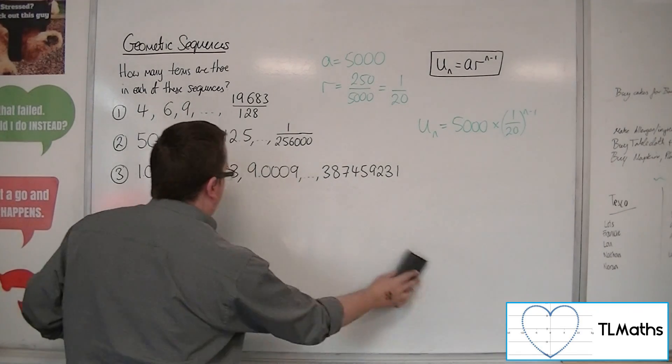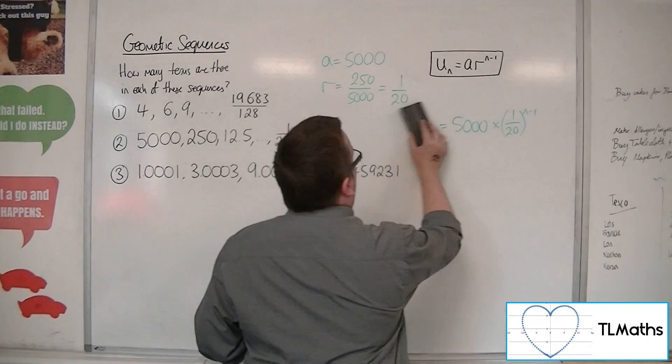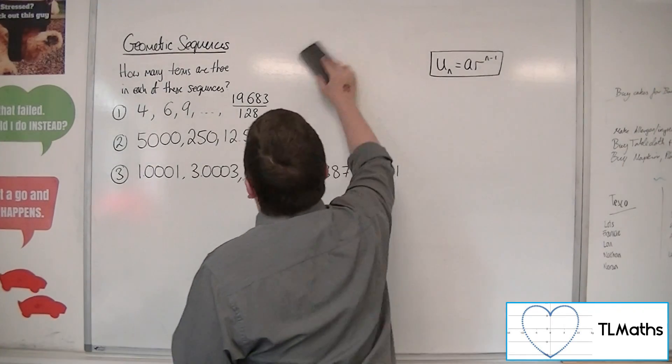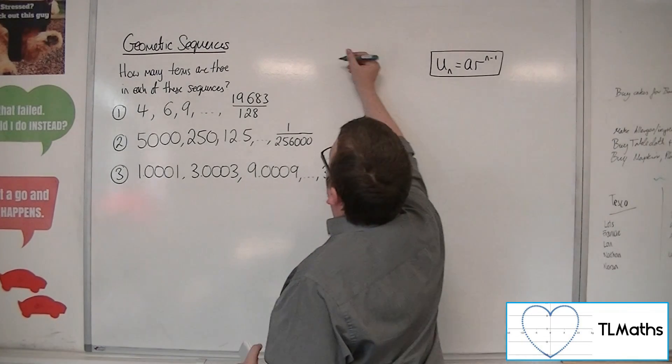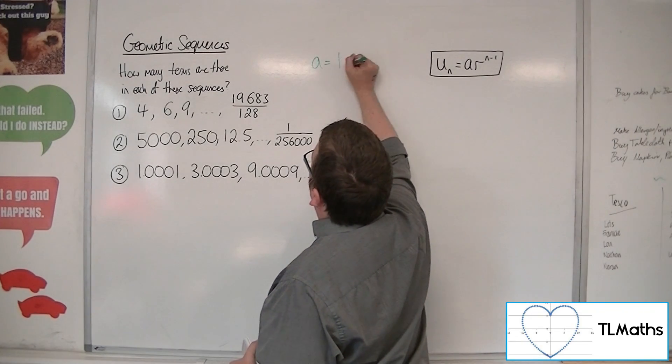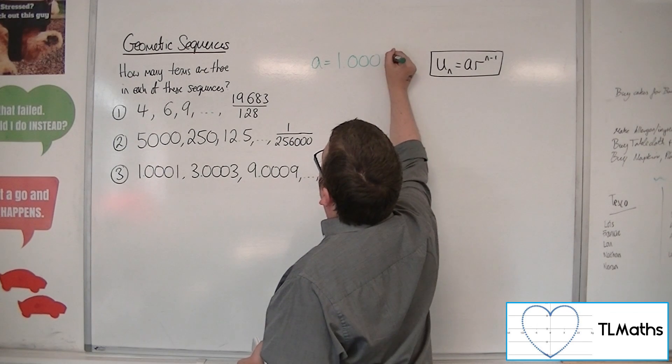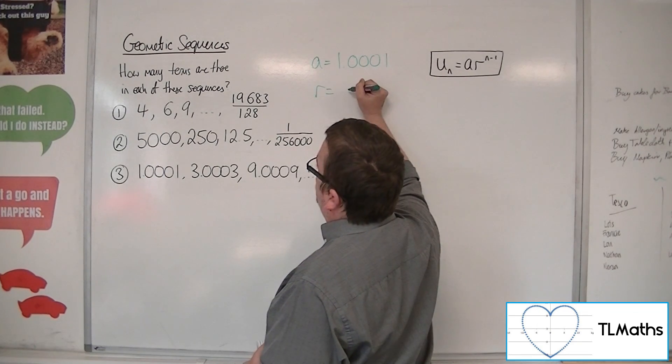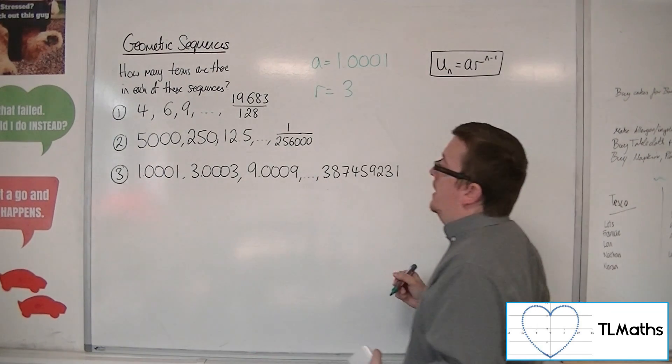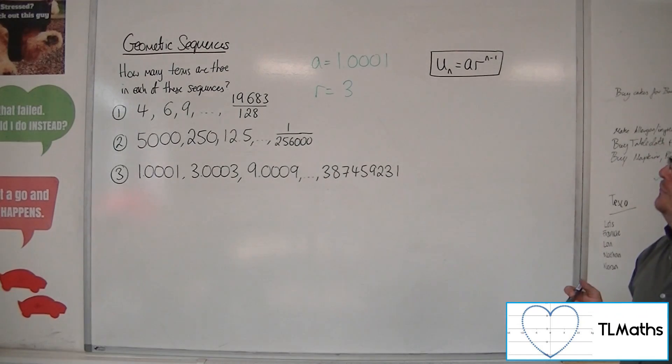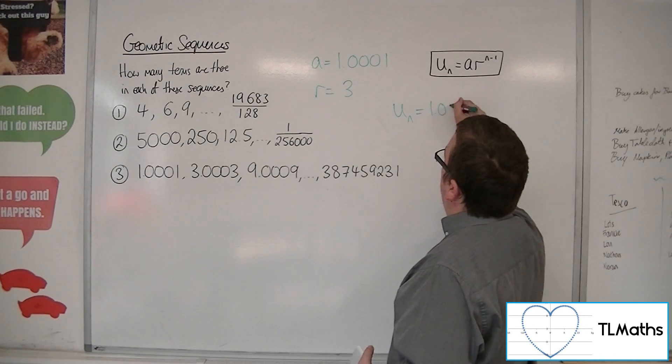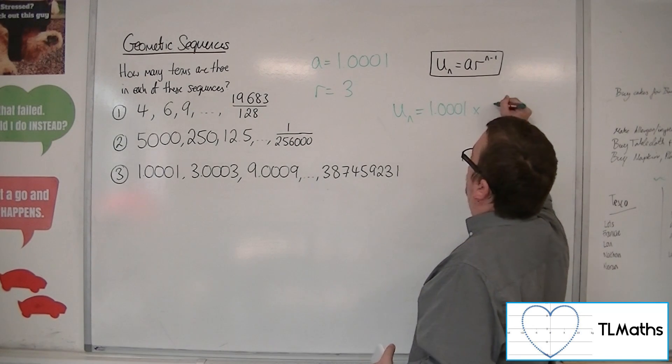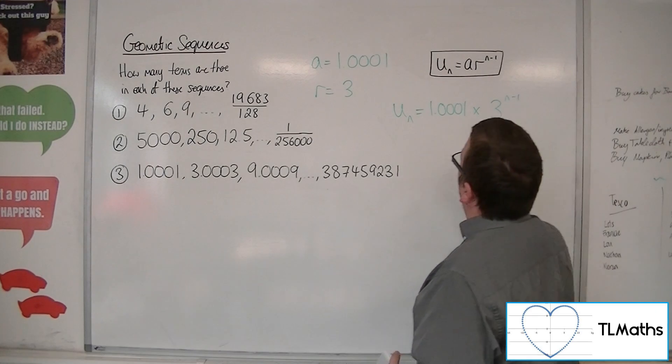Okay, last one, number 3. We have our first term of 1.0001 and a common ratio, clearly, of 3. Okay, multiplying by 3 each time. So the nth term, Un, is a times by r to the n minus 1.